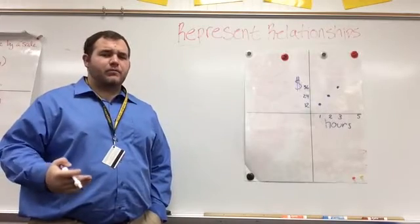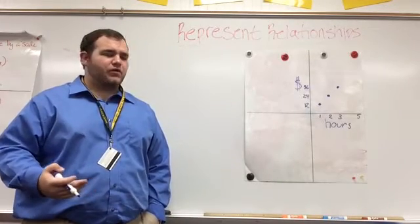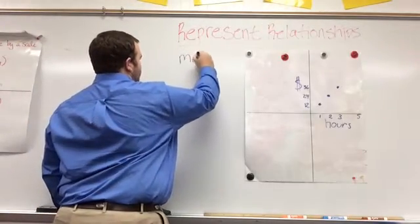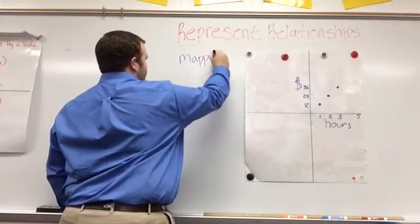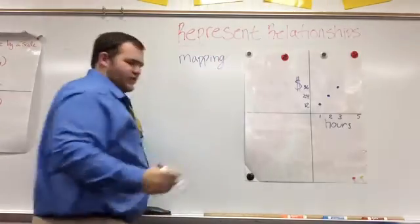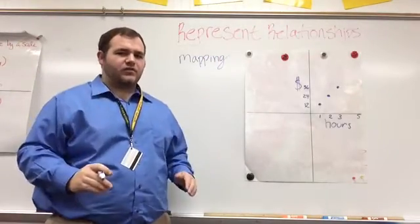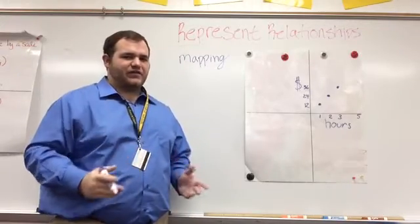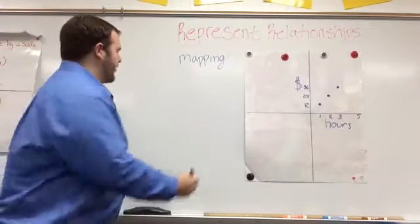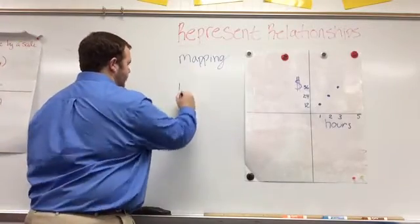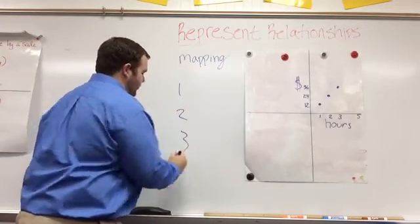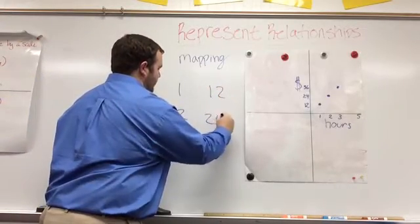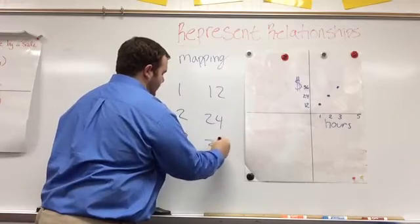This fourth one that we're going to go over may be new, maybe not, might be a review, but it's called a mapping. So make sure you get this down, mapping. It's very similar to a table in that we have two columns, but it's not going to be like lines creating a box. So we know our X values or our H for hours was 1, 2, 3. And what we had for our cash was 12, 24, and 36.